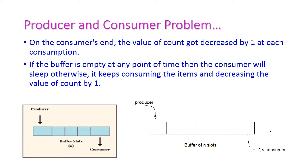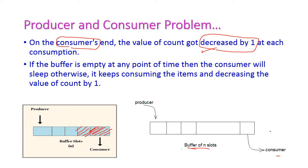On the consumer side, the consumer reads something from a buffer slot and the count variable gets decremented by 1. Whenever the consumer consumes something from the buffer slot, the count value is decremented. If all buffer slots have been read by the consumer, the count value becomes 0, and once the count value is 0, the consumer will call sleep and go to sleep state.